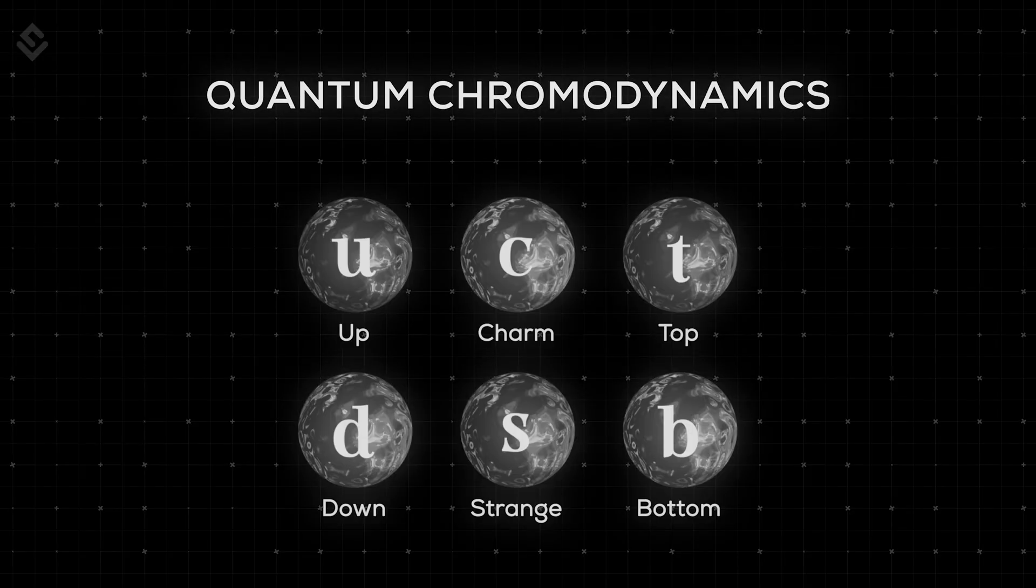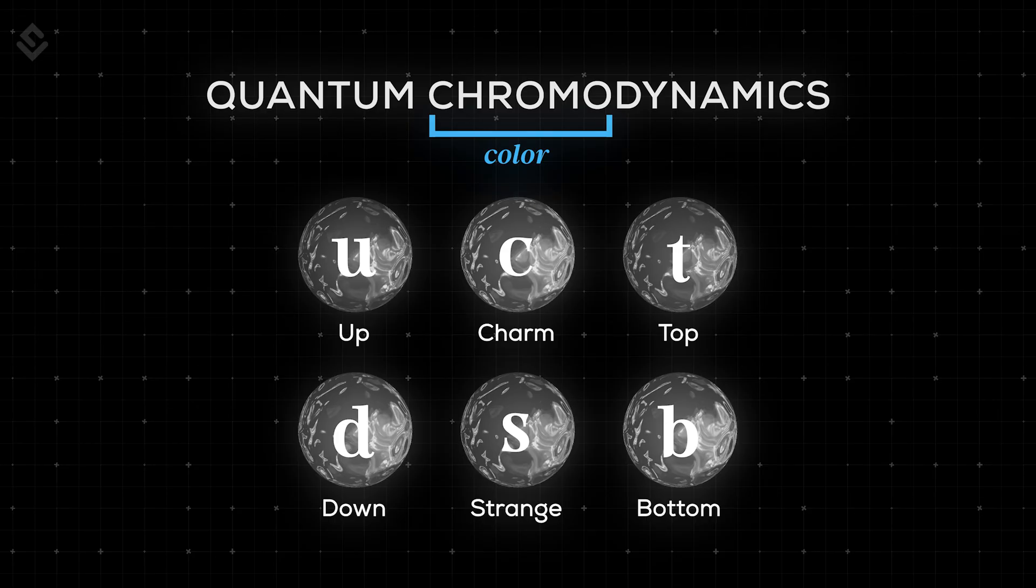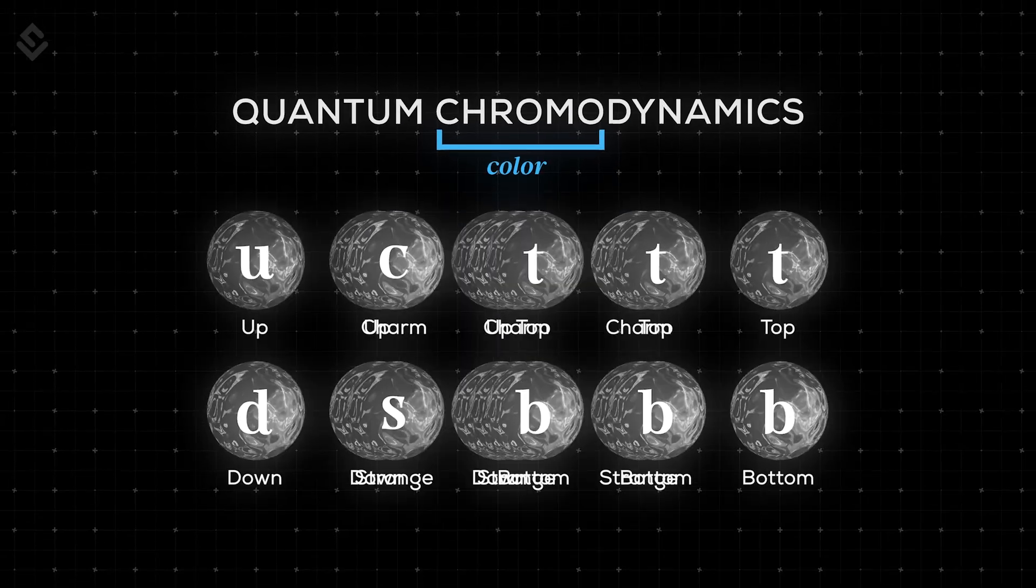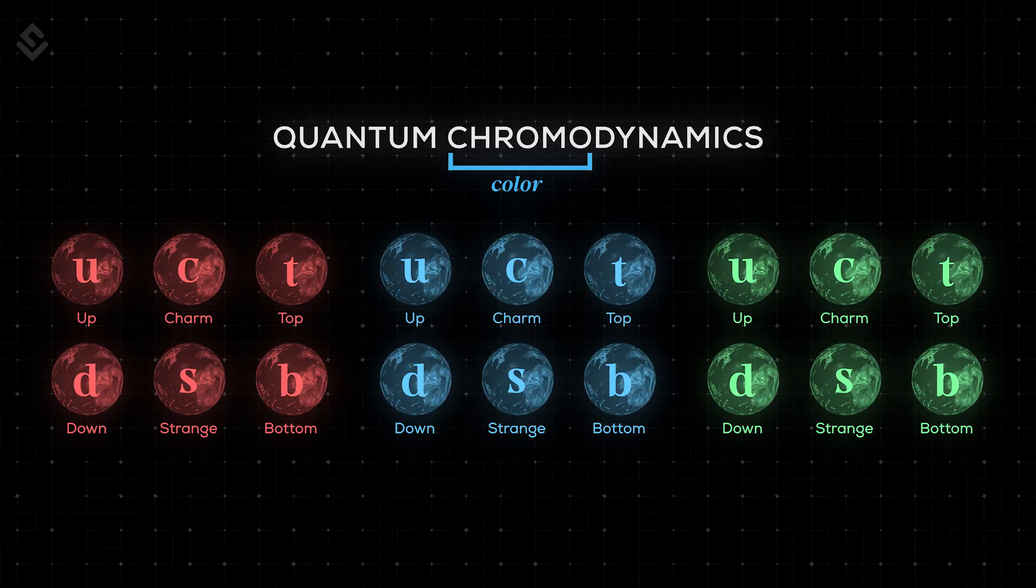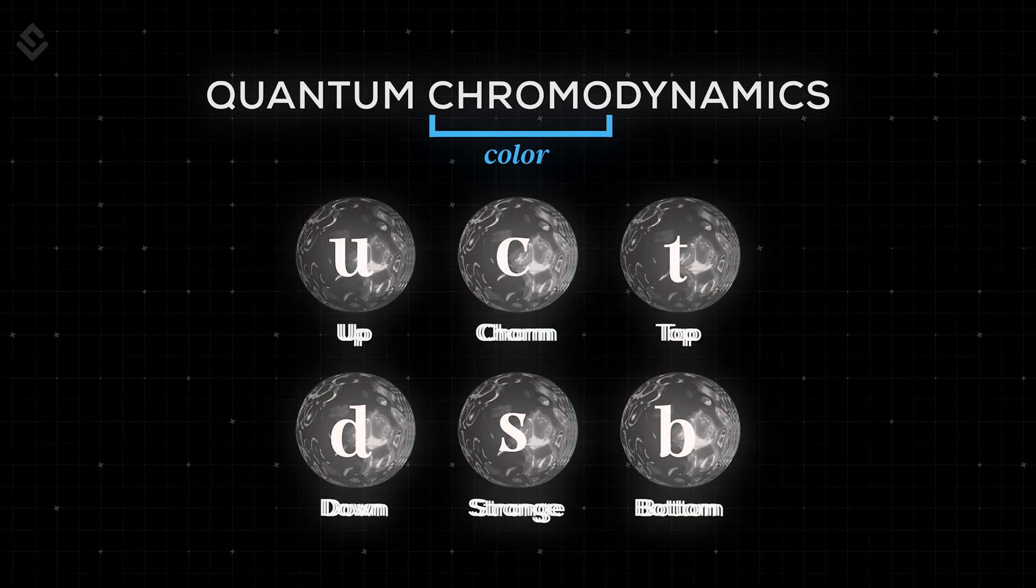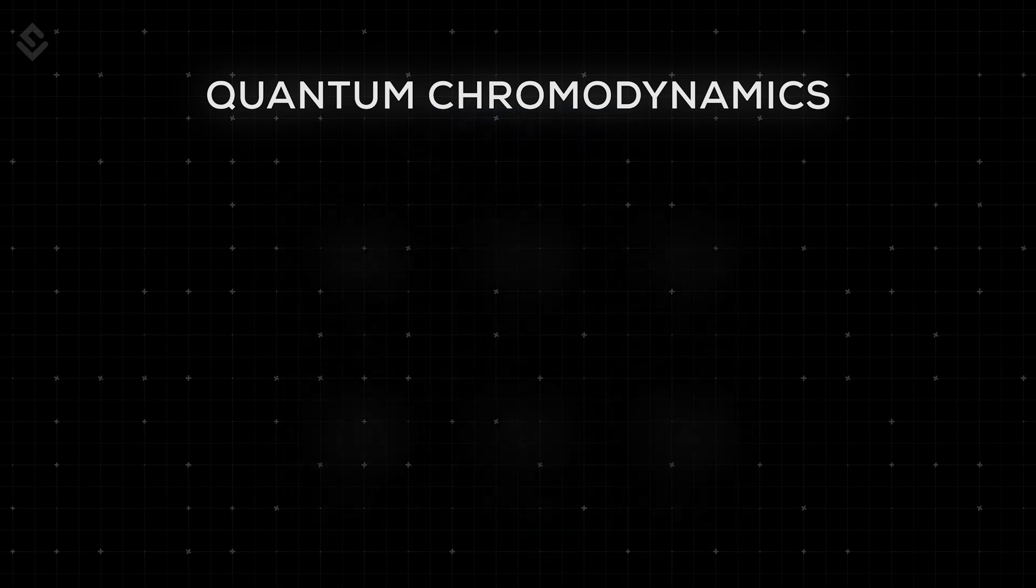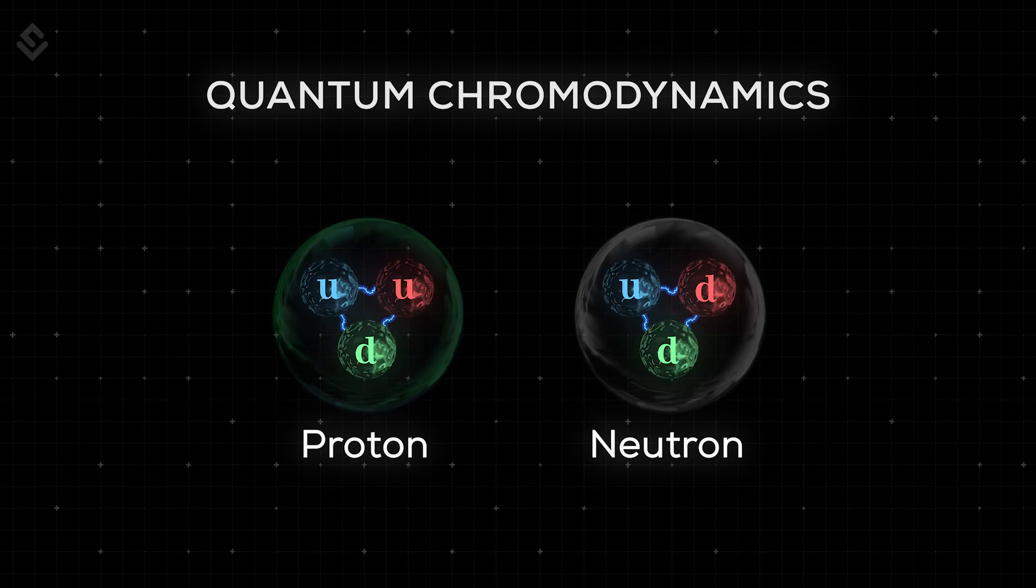In quantum chromodynamics, quarks have something called a color charge, which is just a fancy way of saying that they come in three different things: red, blue, and green. And believe me, these colors are not the colors that you see in your eyes. It's just a way to differentiate between different quarks. Scientists. These quarks always combine in such a way that their color charge adds up to neutral, or white. Which means that you will find one red, one blue, and one green quark in a proton or neutron, making the combination color neutral.